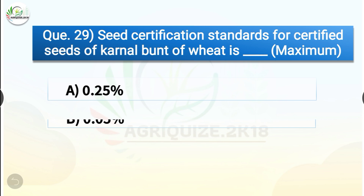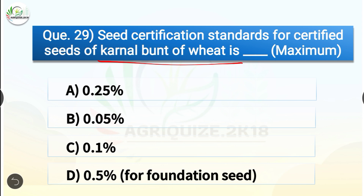Question number twenty-nine: Seed certification standards for certified seeds of kernel bunt of wheat is dash. The options are 0.25%, 0.05%, 0.1%, or 0.5%. The correct answer is option A, 0.25%. Seed certification standards for certified seeds of kernel bunt of wheat is 0.25%, whereas it is 0.25% for foundation seed as well.